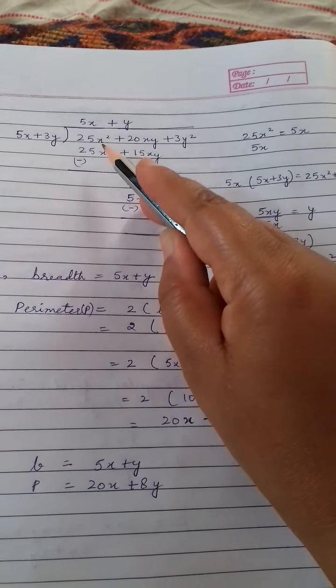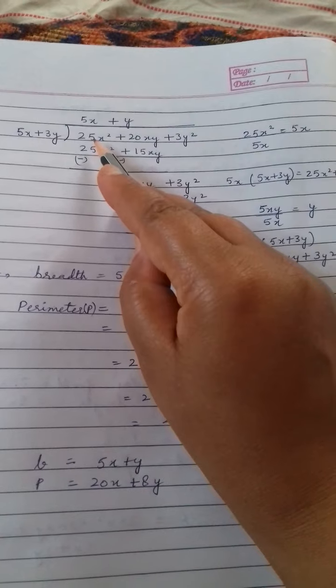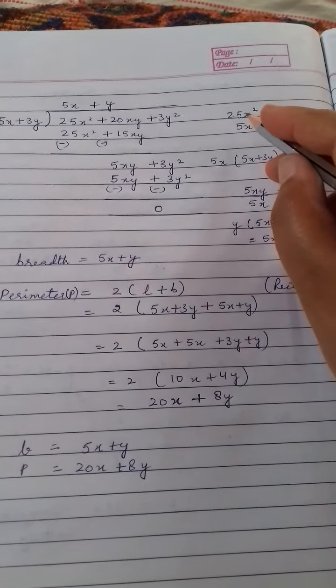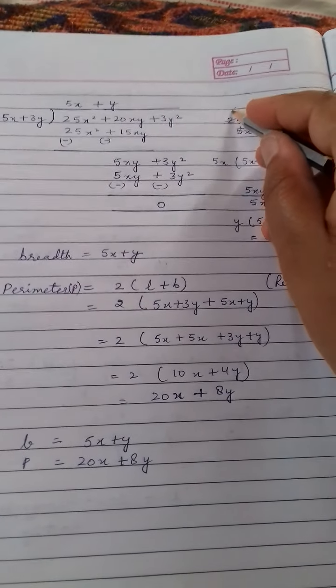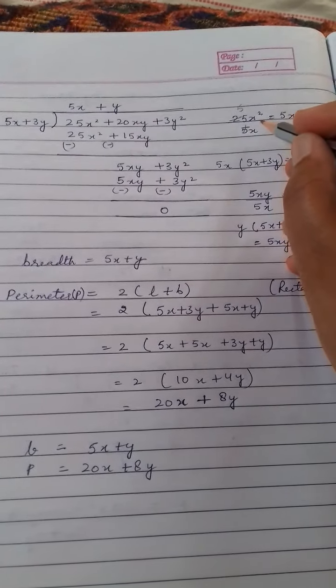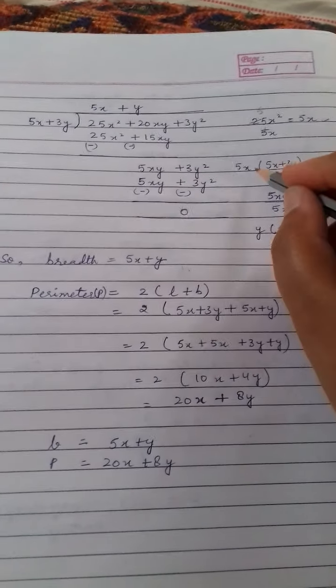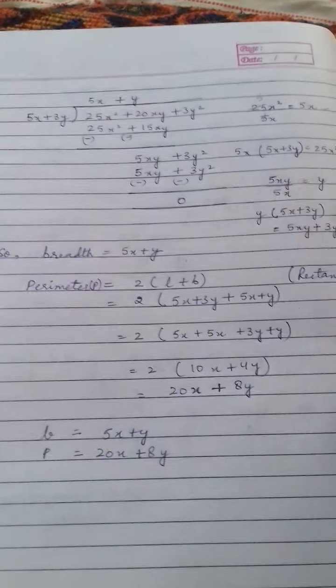First divide this 25x square with this 5x. First term of the dividend by the first term of the divisor. 25x square upon 5x. 5 ones are 5, 5 fives are 25, and 1x will cancel 1x. So what is left? 5x. Now multiply this 5x with 5x plus 3y, the divisor.